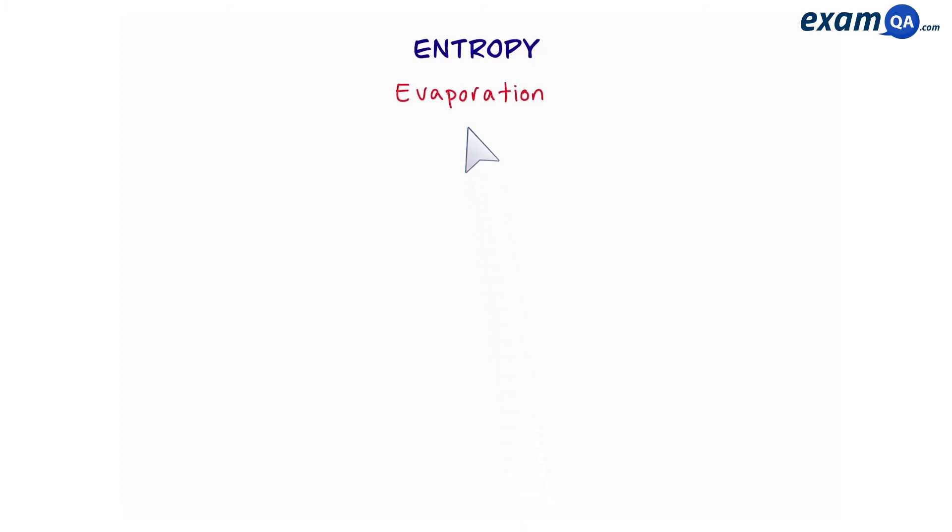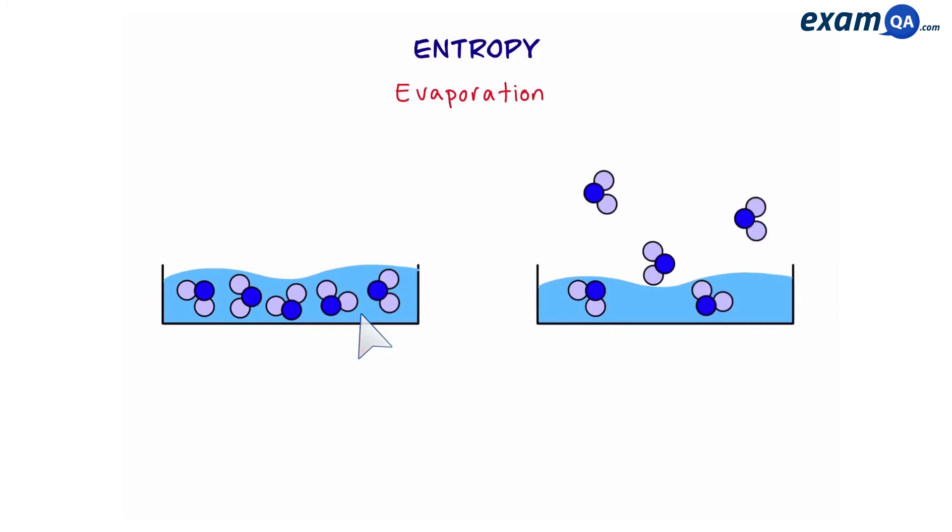Another factor is evaporation. So on the left I've got a solution and on the right some molecules have begun to evaporate. That means we've created some gaseous molecules. And looking back at the first example, we know that gases have more randomness than liquids or solutions. So this means there's more disorder when it's evaporated, and again that means there's more entropy.